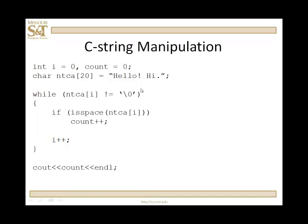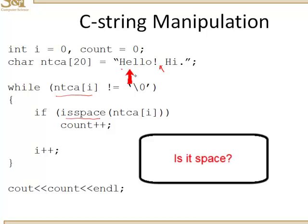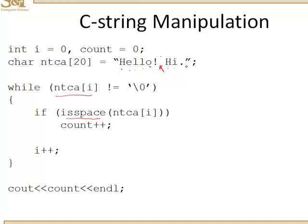Another example with the same null terminated character array 'hello, hi'. We walk down that array in the while loop, looking at each character until the null character, asking: is it space? Space includes space, tab, and newline. We only have one space. Walking through: is it space? No, no, no, no, no, no — yes — no, no, no, no. We end up with an answer of one.